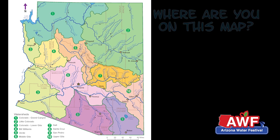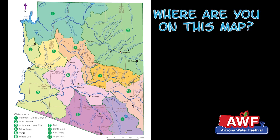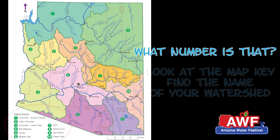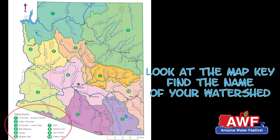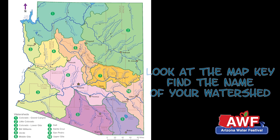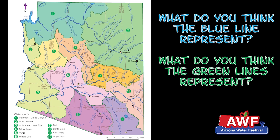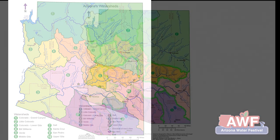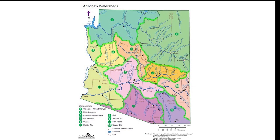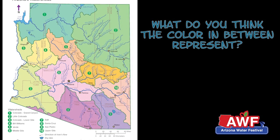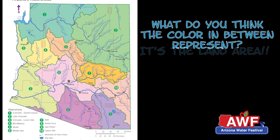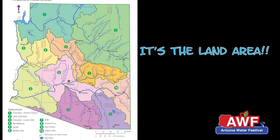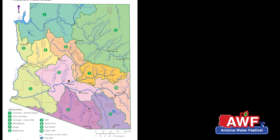Look at this map. Where are you on this map? What number is that? If we look at the map key, can you find the name of your watershed? What do you think the blue and green lines represent? The blue lines represent rivers and the green lines represent mountain areas or high points of land. What do you think the color in between represents? It's the land area. So, everything within the color is within the boundaries of the watershed, including you, plants, animals, houses, and streets.